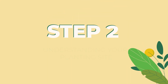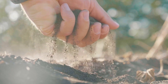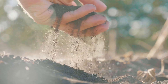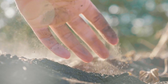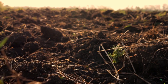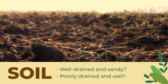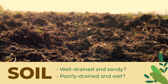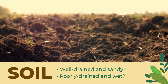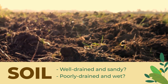Step two: understanding the planting site. Before you can select a tree, you need to think about your planting site. Where do tree roots grow? In the soil. So think about what soil type you have, whether it's well-drained and sandy or poorly drained and wet. Matching the right tree with the right soil type will ensure your tree can thrive on your site.